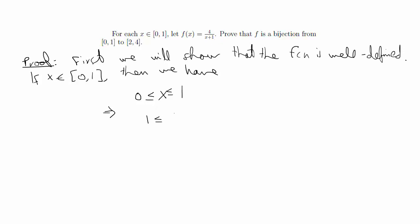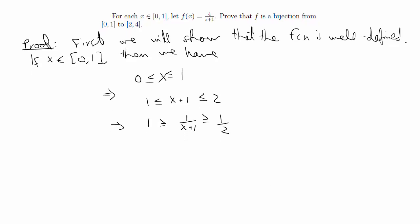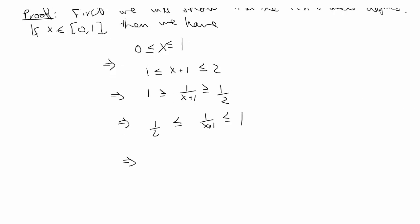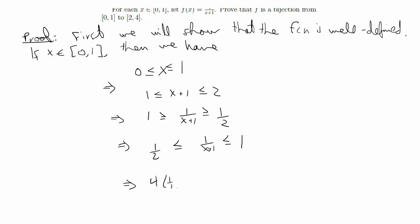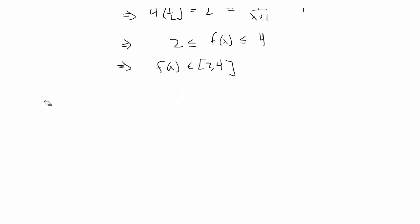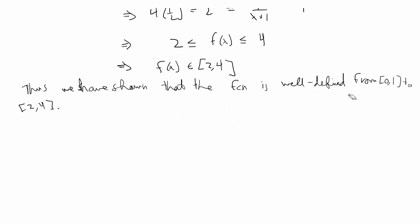We add 1 to the inequality, then take the reciprocal — flipping the signs — so 1/(x+1) is between 1/2 and 1. Rewriting with signs pointing the same way, then multiplying by 4 gives 2 ≤ 4/(x+1) ≤ 4, which equals f(x). Thus we have shown that f(x) ∈ [2,4], and the function is well-defined from [0,1] to [2,4].